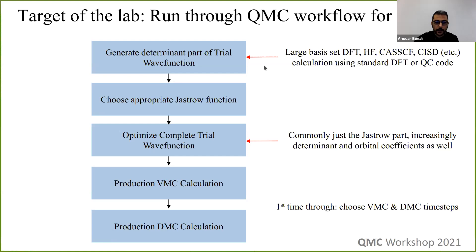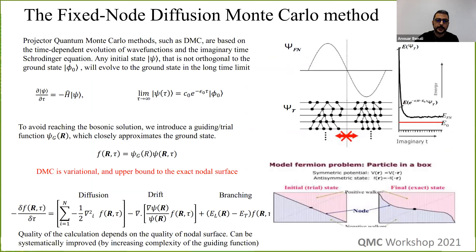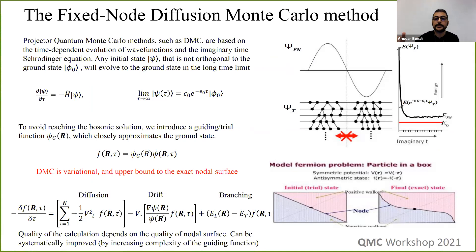A quick recap about the main approximation in fixed node diffusion Monte Carlo. In diffusion Monte Carlo, it is a projector method based on the imaginary time evolution of the wave function. Any state projected onto the ground state will decay exponentially fast. As imaginary time goes on, we decay to the ground state, eliminating noise from excited states. This is equivalent to forcing electrons to collapse to the ground state, which would violate the antisymmetry principle — switching two particles should switch the sign of the wave function.